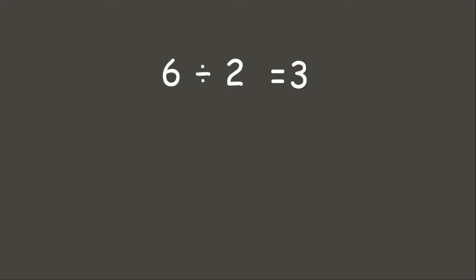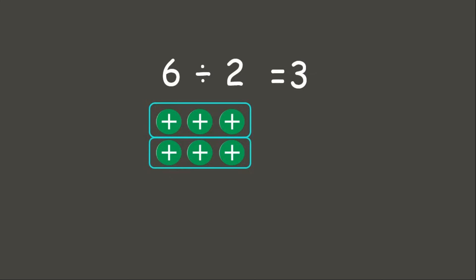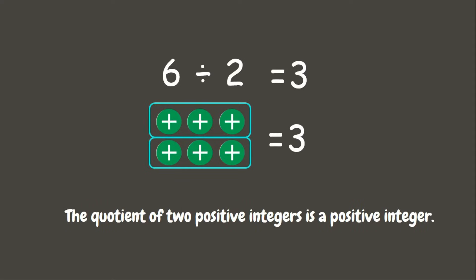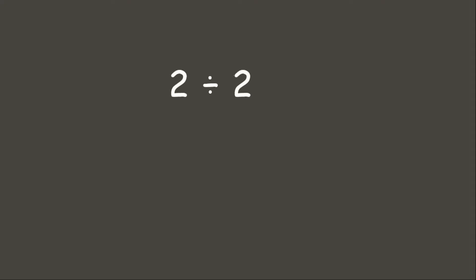Now let us try to solve this using some counters. Our dividend is positive six, so let us put six positives. We need to divide it into two groups. As you can see, there are three positives in each group, therefore our answer is positive three.